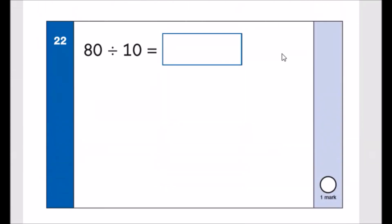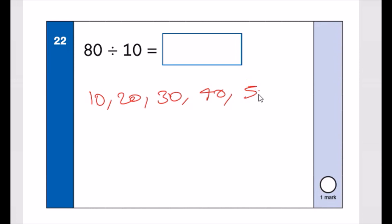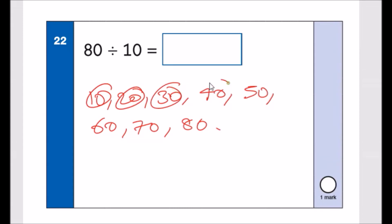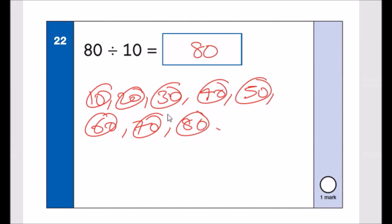Number twenty-two: 80 divided by 10. Count in tens up to 80: 10, 20, 30, 40, 50, 60, 70, 80 — that's 8 jumps. A quick trick: everything going up in tens means you just look at the leading digit, so 80 divided by 10 is 8.